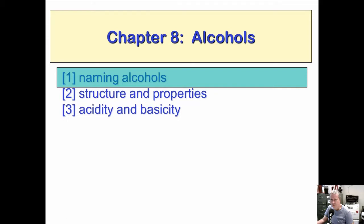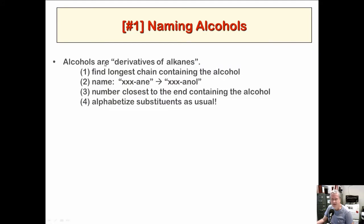For naming alcohols: find the longest chain containing the alcohol, then name it with the suffix -anol instead of -ane — for example, hexane becomes hexanol. Number the chain closest to the end containing the alcohol. Then alphabetize the substituents as usual. For example, 2-bromo-3-methylbutanol: butanol is a 4-carbon alcohol, and if you don't specify the location of the alcohol, it's assumed to be on carbon 1.